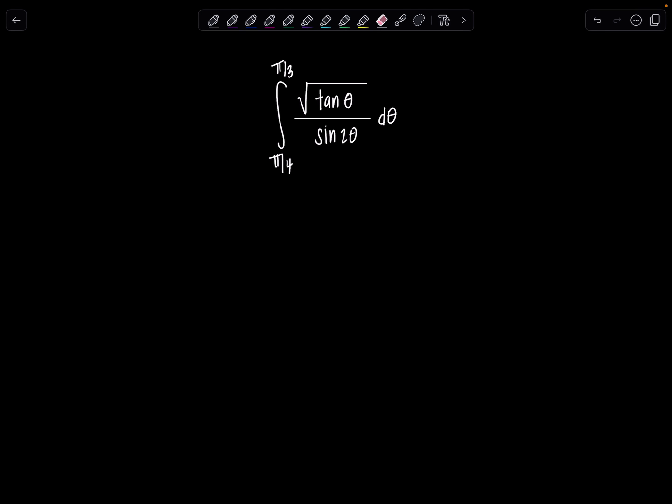First things first, I'm going to rewrite everything in terms of sine thetas, cosine thetas, and apply my double angle identity for this sine 2 theta in the denominator. So keeping our limits of integration, pi over 4 to pi over 3, I have square root of sine theta over cosine theta in the numerator, and then sine 2 theta we can replace with 2 sine theta cosine theta d theta.